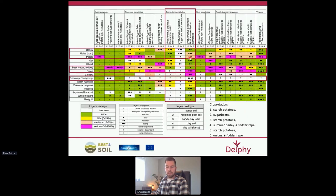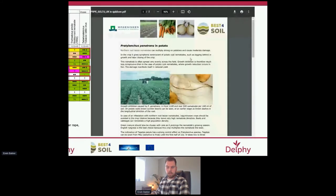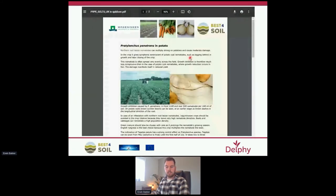When you click on a particular box in the scheme — for example, penetrans in potato — you get extra information about that nematode in that specific crop. Here you can see an example of the information shown by clicking on penetrans in potatoes.